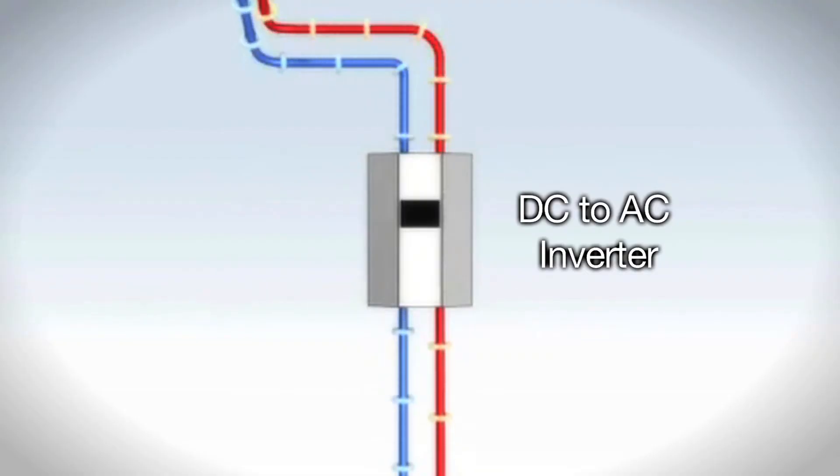This direct current is then converted by an inverter to the alternating current that is used by most electrical lighting and appliances.